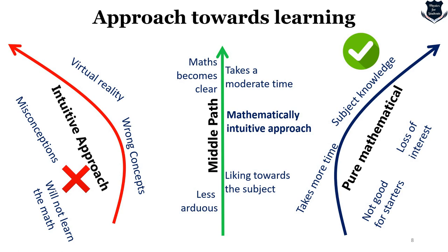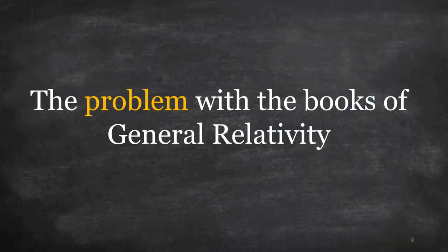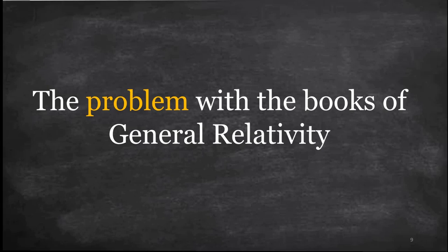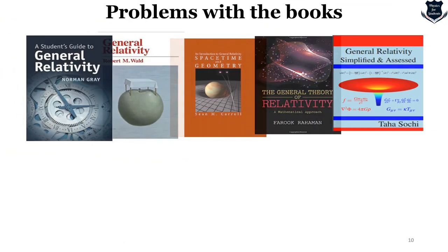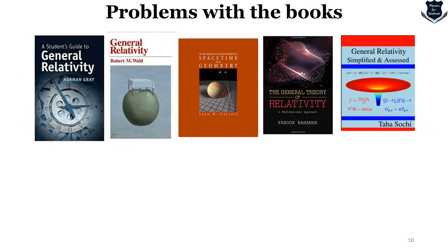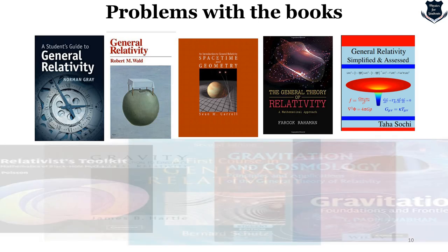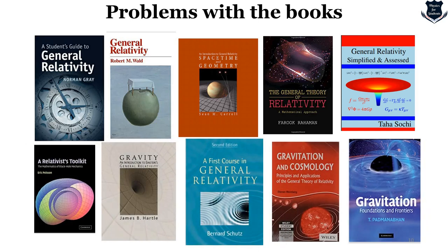I have read quite a lot of books and identified a problem with books on general relativity. Famous books include Wald's book, Sean Carroll's book, Faruk Rahman, Taha Sochi's book, the famous Hartle and Schutz's book, T. Padmanabhan's book, Gravitation and Cosmology by Steven Weinberg, and the Relativistic Toolkit. All these books are good — there is nothing wrong with them — but they all assume you already know a lot of mathematics.